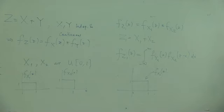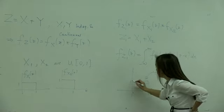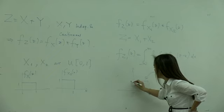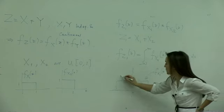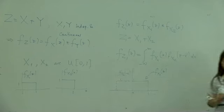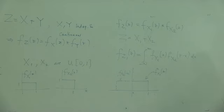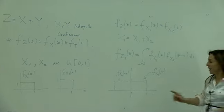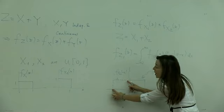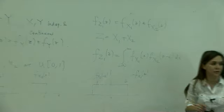fx2 of z minus x — what does it look like? fx2 of negative x is simply the flipped version of fx2 of x. And fx2 of z minus x is the flipped version shifted by z. If z is positive, it's shifted to the right; if z is negative, it's shifted to the left.